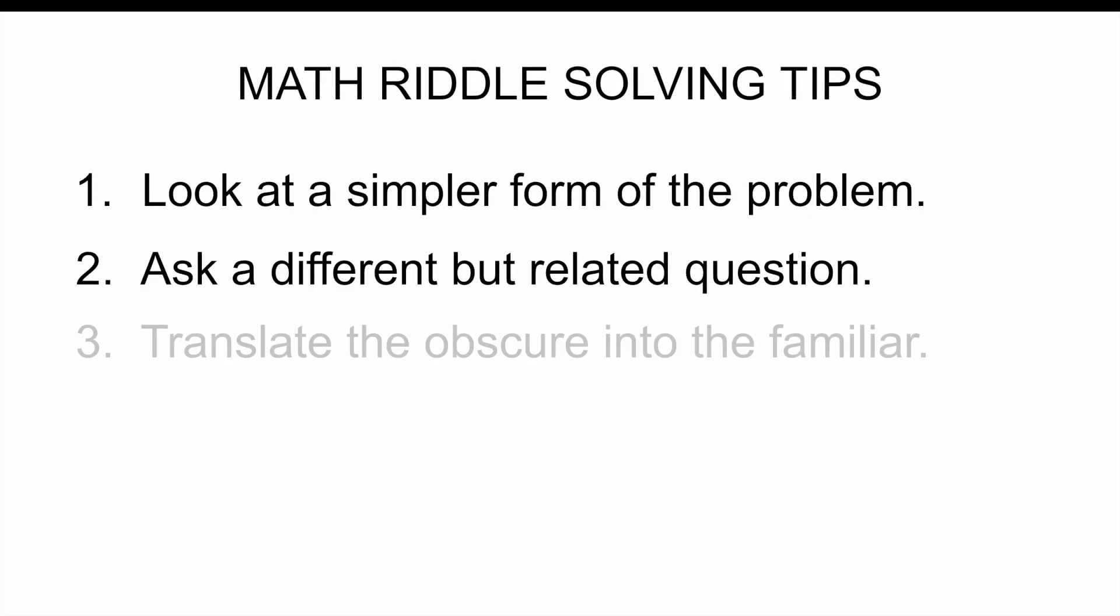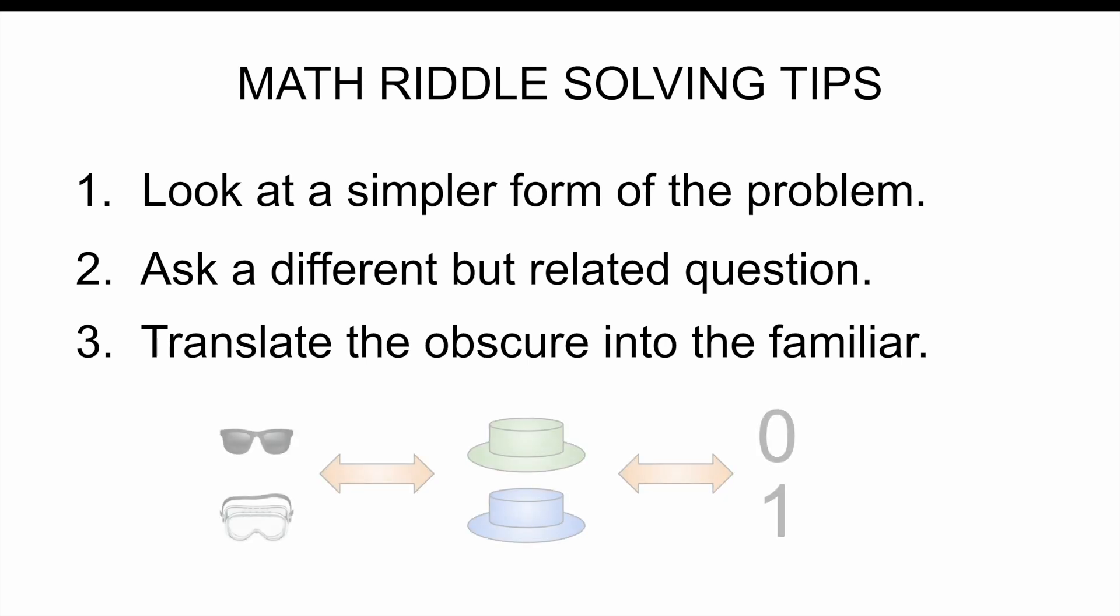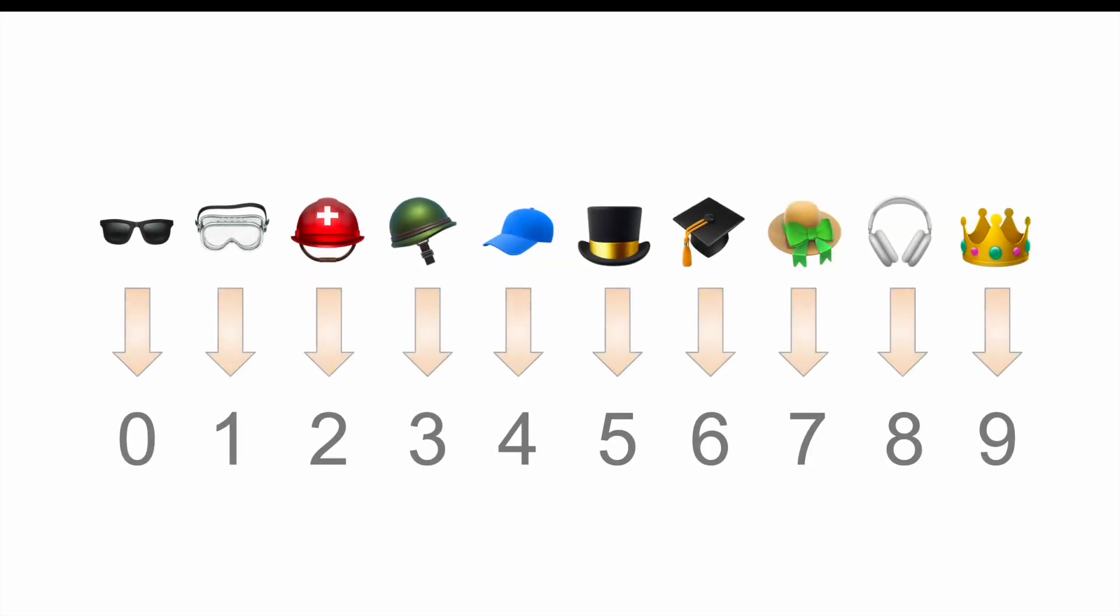So for our problem, we need to find some property of the overall setup that has 10 mutually exclusive scenarios and make each prisoner give an answer that assumes a different one of those scenarios. At this point, I also want to share a very small math riddle solving tip number three. Translate the obscure into the familiar. In other words, think of unfamiliar objects in terms of familiar objects. This one's kind of obvious, but the types of hats can be anything that has 10 distinct elements, like hats of different colors or even numbers. As they plan their strategy, the prisoners can map each hat type to a number, and the problem can be viewed in terms of those numbers. Now take one final chance to pause and remember, you're not trying to make at least one prisoner right, you're just trying to make sure that no more than one can be right. Ready?